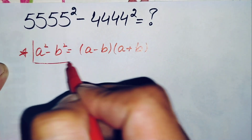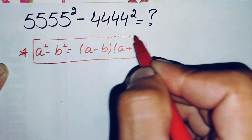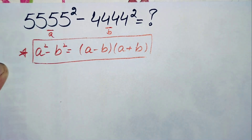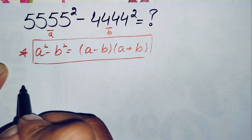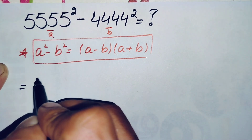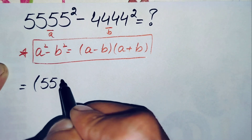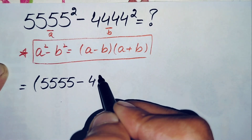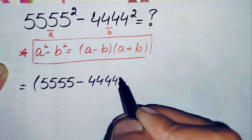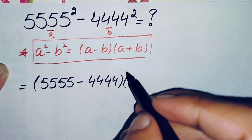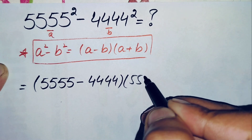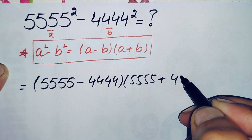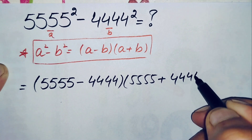Using this identity, where a is 5,555 and b is 4,444, this equation becomes a minus b — so 5,555 minus 4,444 — times a plus b — so 5,555 plus 4,444.